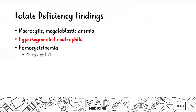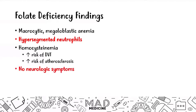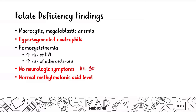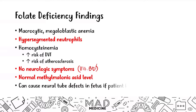Homocystinemia can also happen, and that increases the risk of DVT and atherosclerosis. However, you're not going to see any neurologic symptoms — that's very important — because this is different from vitamin B12 deficiency, where you will see neurologic symptoms. You're also going to see normal methylmalonic acid levels.